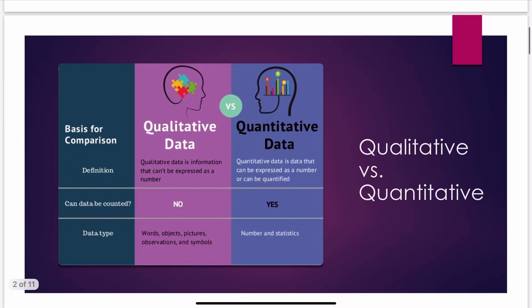Let's talk a little bit about qualitative versus quantitative. Qualitative is more a description of something. What color is this? Does this form bubbles when it reacted? Does this dissolve? It can't be expressed as a numerical value.